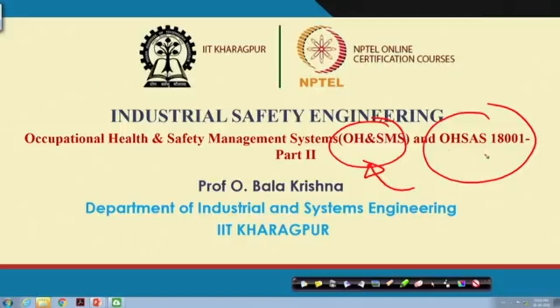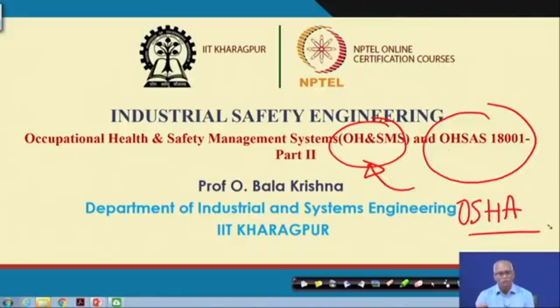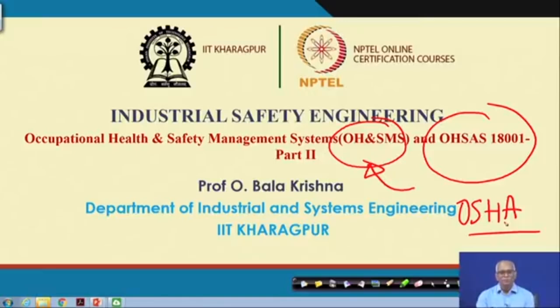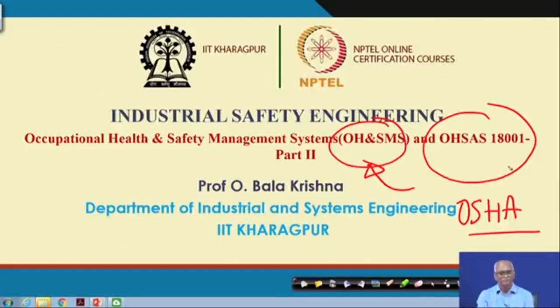We will also talk about occupational health and safety assessment series OHSAS 18001 and how it is used to develop an occupational health and safety management system. Please understand OHSAS is different from OSHA — some people get confused. OSHA is the Occupational Safety and Health Administration, a body in the United States which controls OHS across the country under the labor ministry. OHSAS 18001 is not related to OSHA; it applies to the whole world.